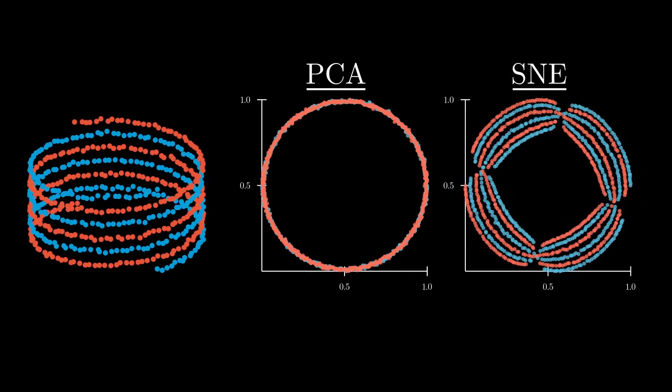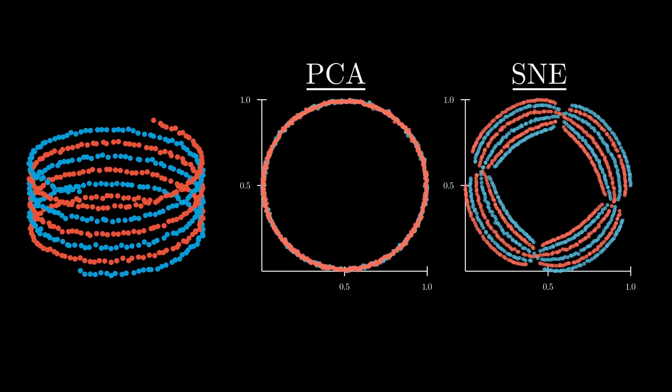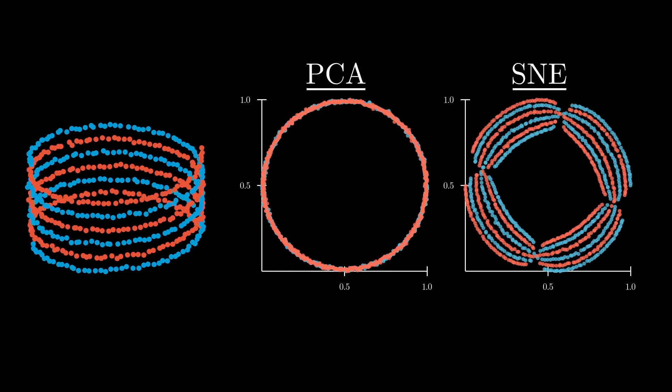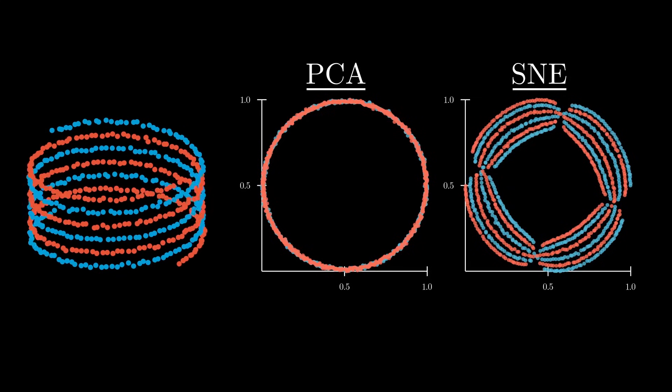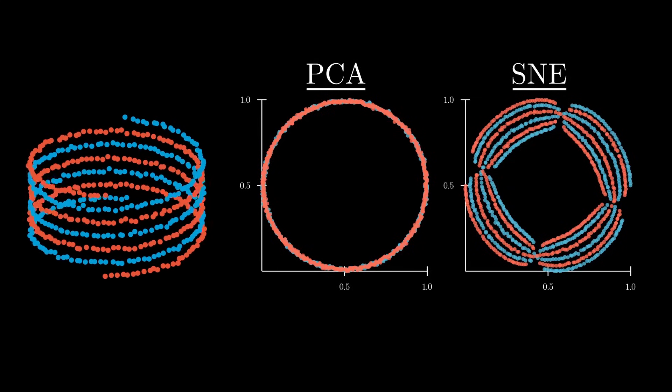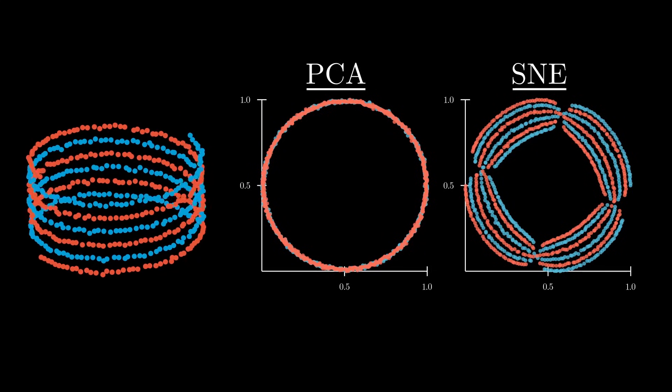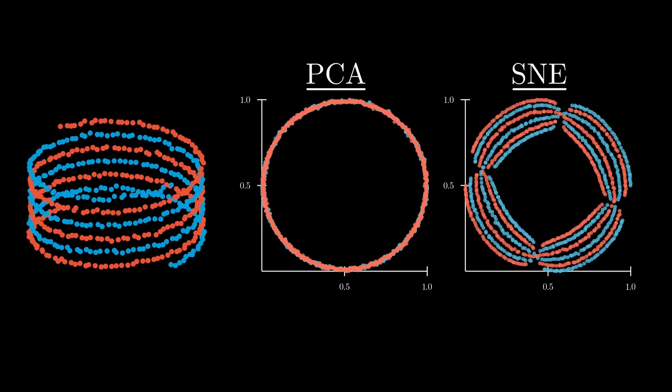As you may have guessed, the main advantage of SNE is that it can handle non-linear data, which is a big improvement over PCA. For example, take this spring-like 3D dataset. On the right is the 2D representation of this dataset using PCA and SNE. As you can see, PCA produces only one mixed-up cluster, whereas SNE successfully separates the two classes in the 2D representation.